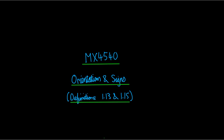A little reminder that if the video is a bit fuzzy, change the quality settings if you can. There should be a little cog symbol in the bottom right of your YouTube window and you can set it to 720p, which is the best available.